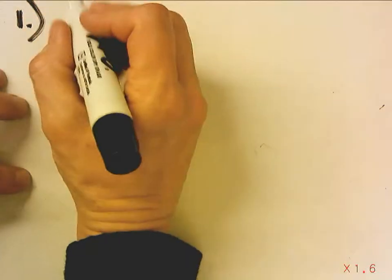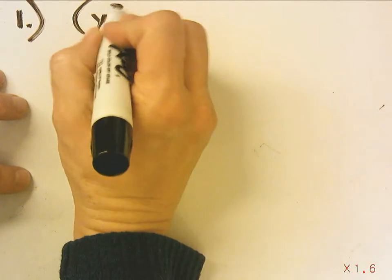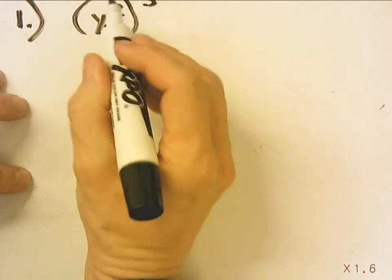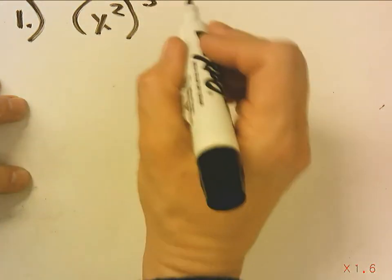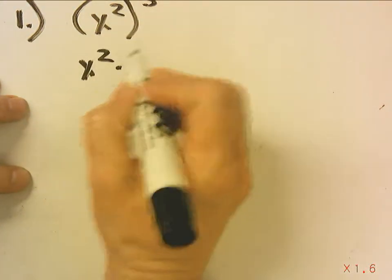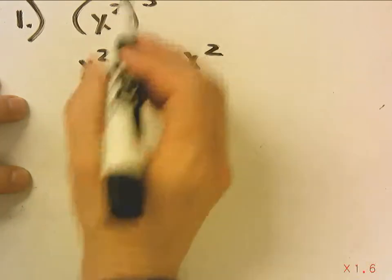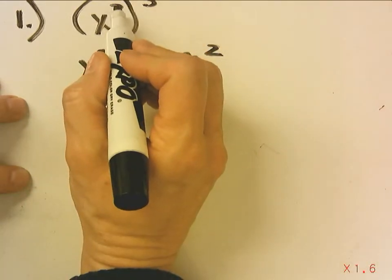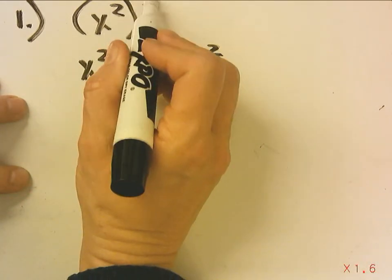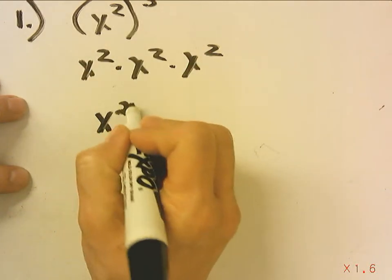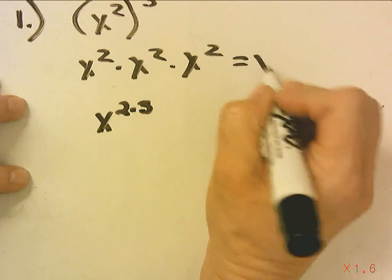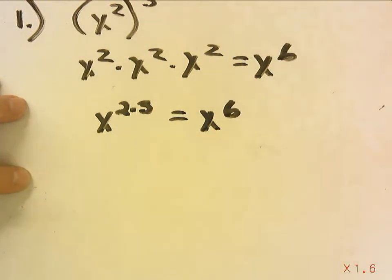Number 1 is x squared cubed. This is a power of a power, and this is the same as saying x squared times x squared times x squared. Or you just remember, x squared to the third is x to the 2 times 3. So either way you look at it, this becomes x to the sixth.